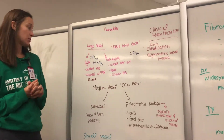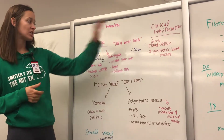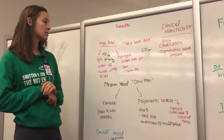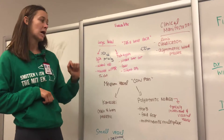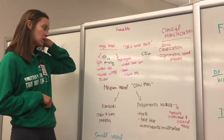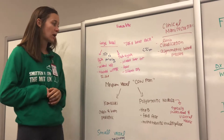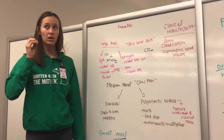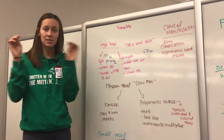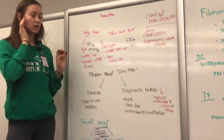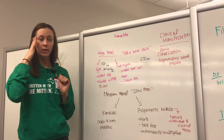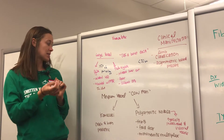To start with large vessel vasculitis, we can remember this as the two T's because GCA is also known as temporal arteritis. So it's temporal arteritis and Takayasu. With GCA or temporal arteritis, this is going to be a granulomatous disorder, where you have granuloma formation due to inflammation occurring in the temporal arteries. It's generally going to be unilateral, so you'll have a unilateral headache.